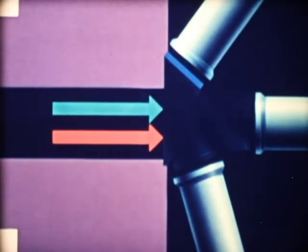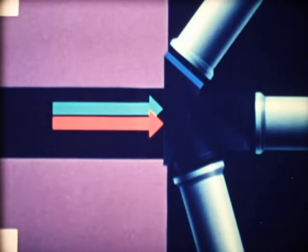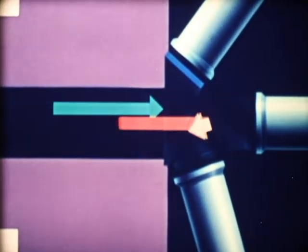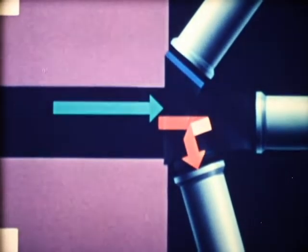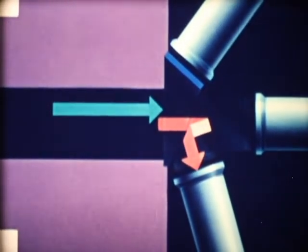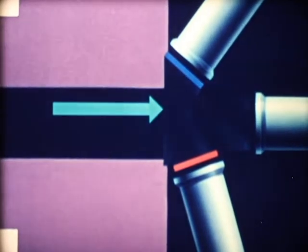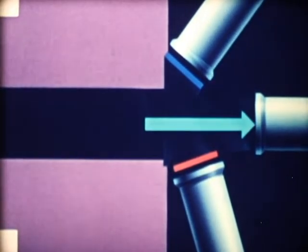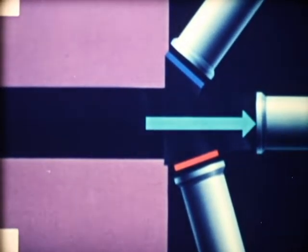Now the red light rays. They pass straight through the first mirror, are reflected by a red selective mirror and enter the lower camera tube. Finally, the green light rays. These pass through the blue and red selective mirrors and enter the middle camera tube.